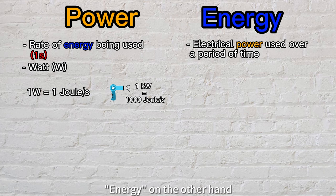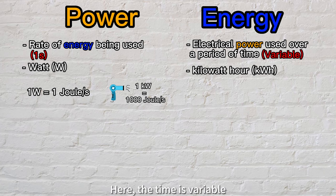Energy, on the other hand, is the amount of electrical power used over a period of time and is measured in kilowatt hours. Here, the time is variable, and energy consumption depends on how long we use the device.